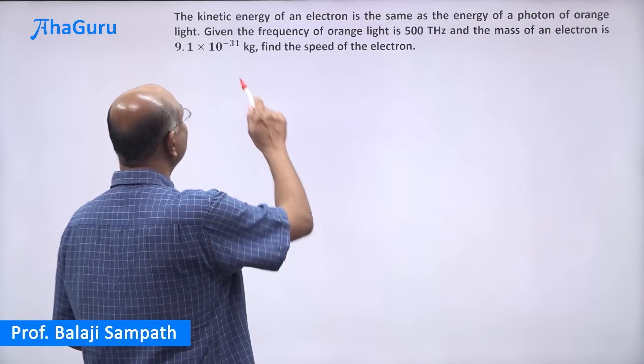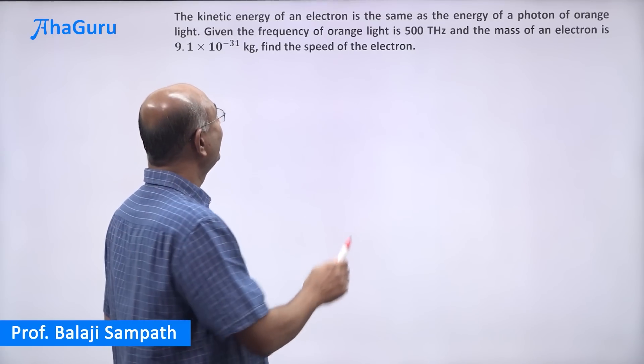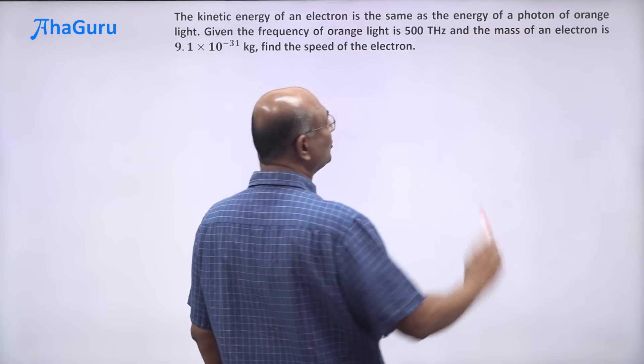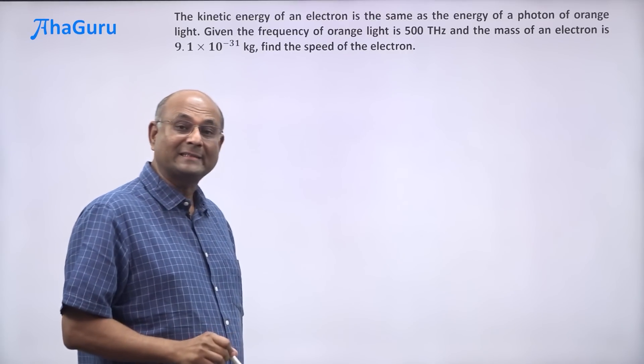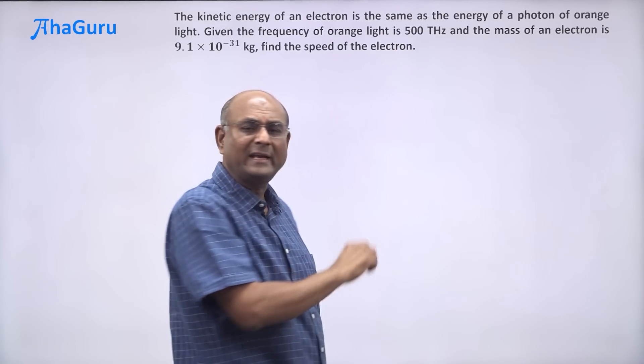In this question, we have been told that the kinetic energy of an electron is the same as the energy of a photon of orange light. The frequency of orange light is given 500 THz.